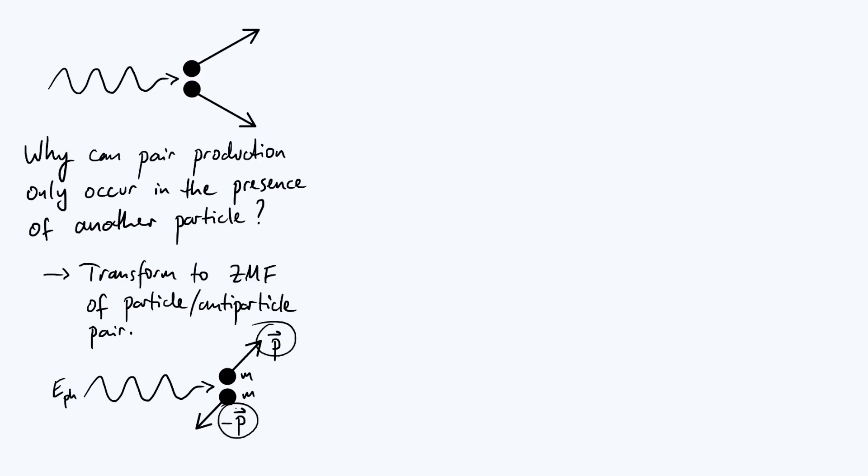Both particles have a mass of m because it's a particle and its corresponding antiparticle. They always have the same mass, and we're going to say that in this particular frame, the photon has energy e_ph. So we're going to approach this by constructing equations for conservation of energy and conservation of momentum and exploring the consequences of those.